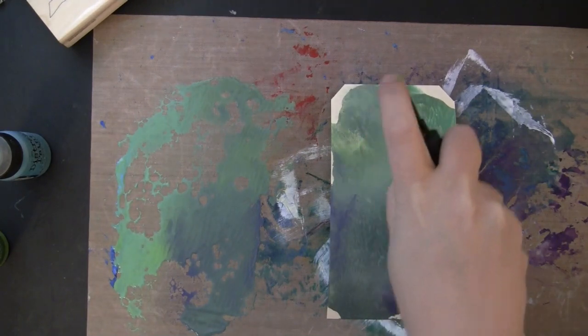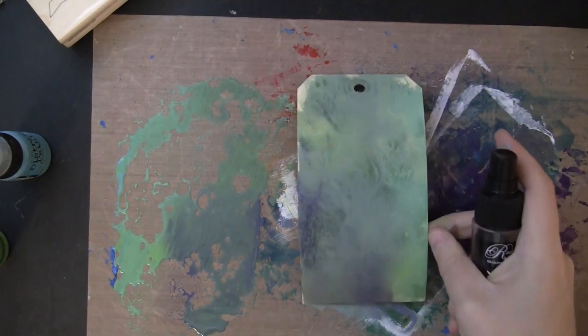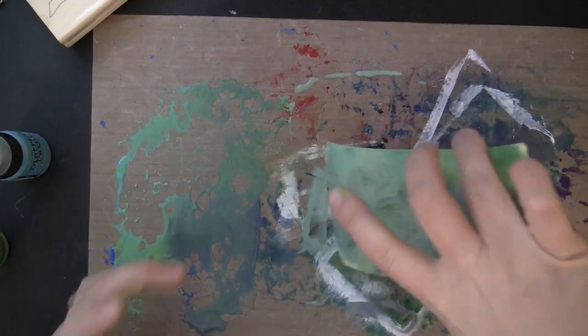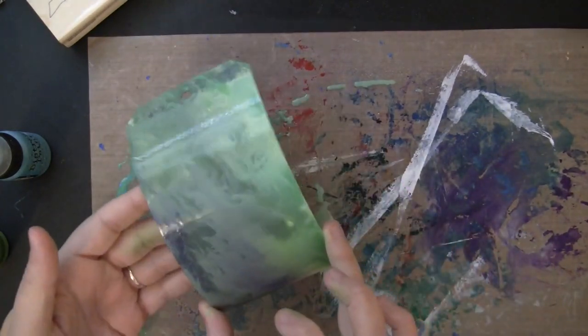So once I press my tag into the ink, I'm spritzing it with water, and because these are Distress, the water will activate the ink and allow things to blend and move.